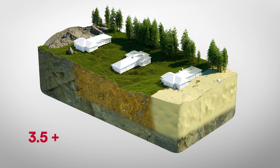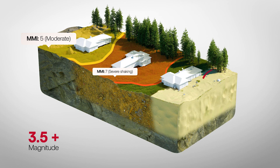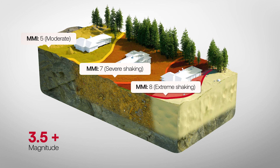Following an earthquake of magnitude 3.5 or greater, Shaking Layers maps are produced using ground motion data that tell us how intense the shaking was at different locations. The first maps are automatically produced within 10 to 20 minutes of an earthquake, and may be modified over time by GNS seismologists as more information becomes available.